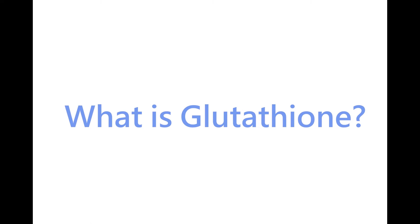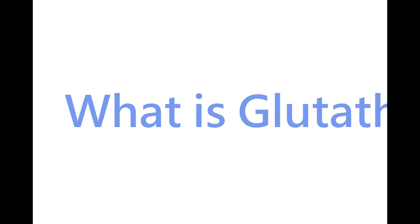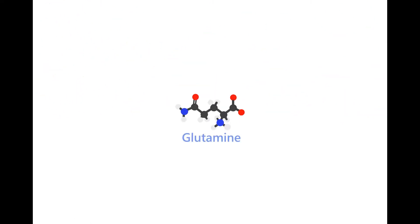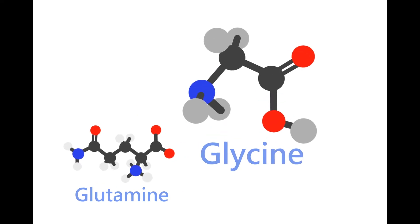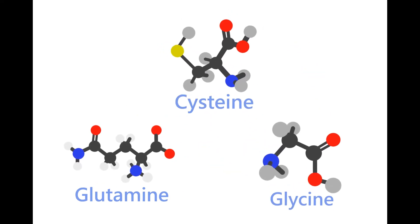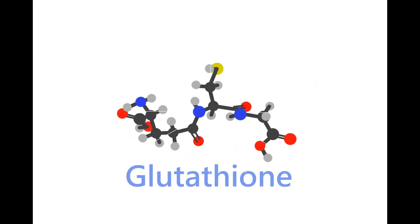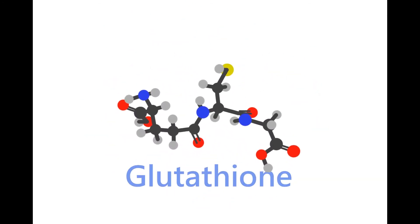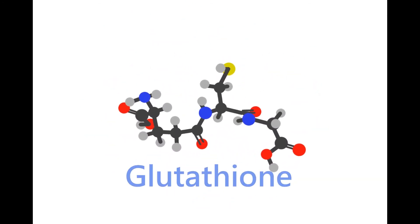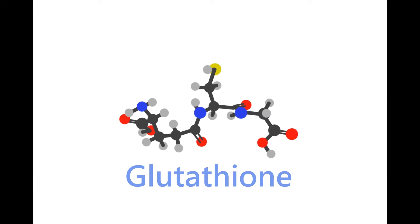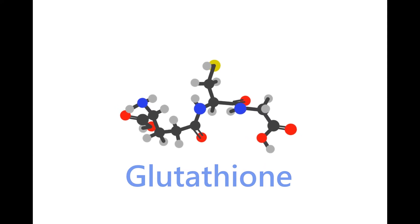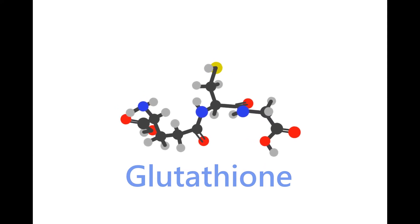What is glutathione, or GSH? On a molecular level, it is a tripeptide made of glutamine, glycine, and cysteine, known as GSH. It is commonly referred to as the mother of all antioxidants because it is your body's primary detoxifier and cellular protection.